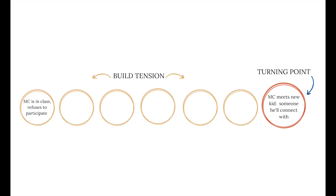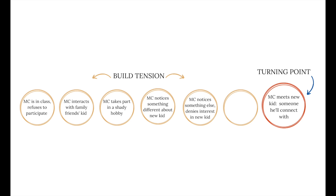So our outline so far: our main character is in class refusing to participate, interacting with a family friend's kid, taking part in his sketchy hobby, noticing something different about a new kid. Then he notices something else but denies his interest. He notices something else that piques his interest and thinks, maybe this person is different. And then that leads up to the turning point. See how each of these points is big picture? We don't know the details yet but we have a sense of how the story might unfold.